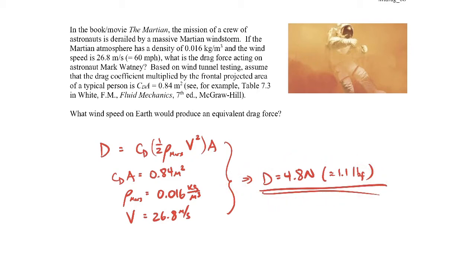The reason is because the density of the atmosphere on Mars is very small. The density of air on Earth is 1.23 kilograms per cubic meter at standard temperature and pressure. You can see that the density of Mars is about a hundred times smaller than what it is on Earth, so there's quite a bit of difference in the resulting drag force.